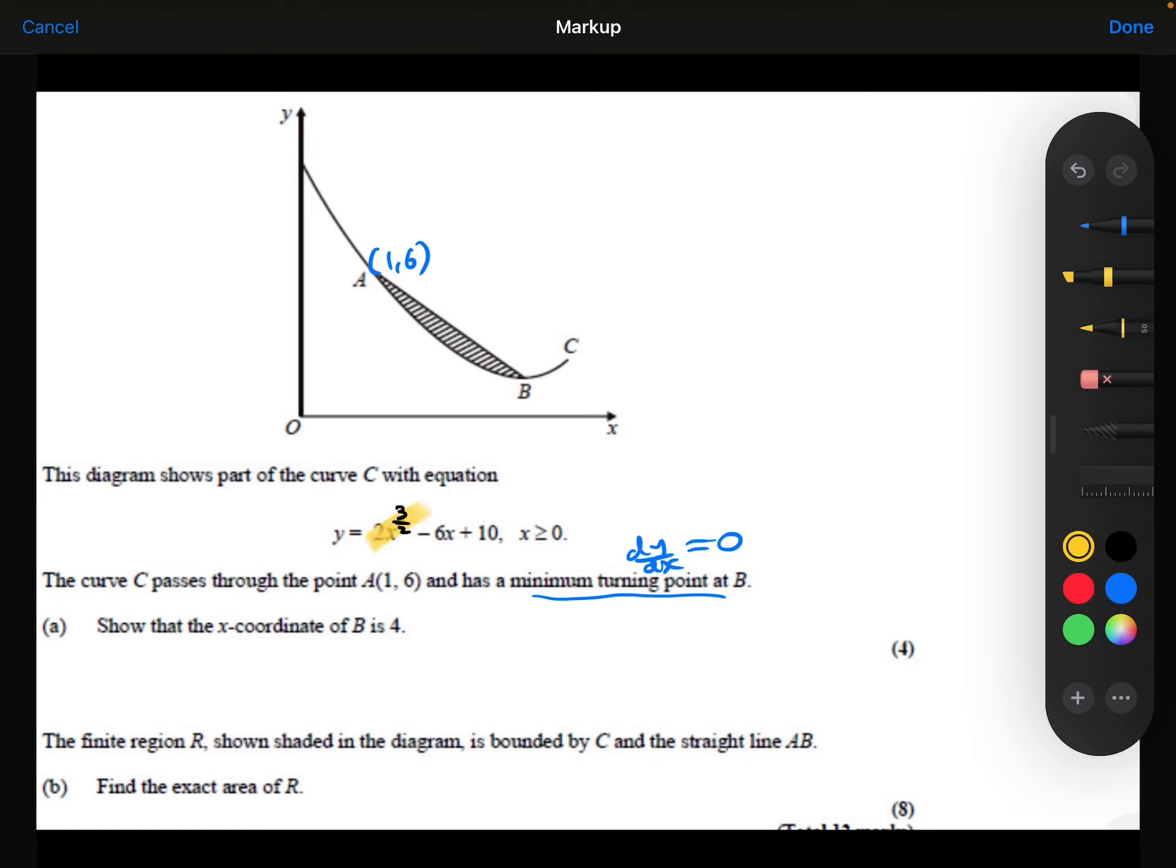Differentiating the 2x to the power 3 over 2, we're going to multiply by the power, so multiply by the 3 over 2. 2 times 3 over 2 is 3. So we get 3x, and we're going to take 1 away from the power now, so take 1 away from the 3 over 2, and we get a half. Differentiating the minus 6x will just be minus 6, and the 10 will differentiate to be 0.